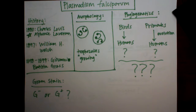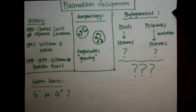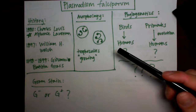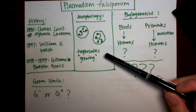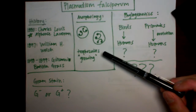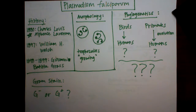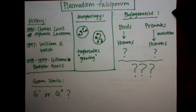Take notes — this material will be on the test. Regarding morphology, Plasmodium falciparum looks a specific way when inside red blood cells; at that stage they are called trophozoites, which grow and absorb nutrients from the red blood cells. Compared to other Plasmodium species, P. falciparum has more but smaller trophozoites and distinct crescent-shaped gametocytes.